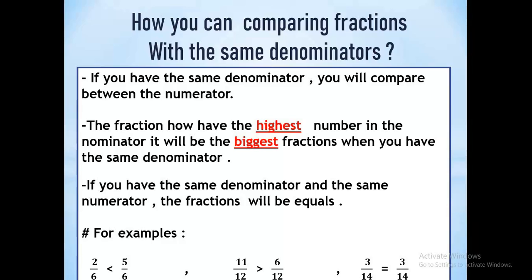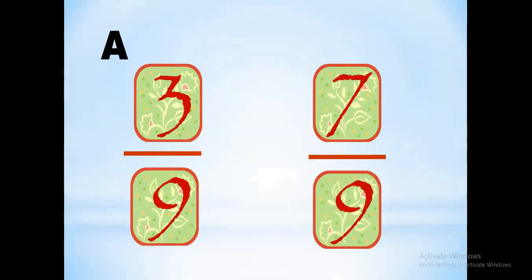For example, look at this one: 2 over 6 and 5 over 6. We have the same denominator, so we will look up to the numerator — 2 and 5. Which number is the biggest? It's 5, so the fraction 5 over 6 is the highest fraction.